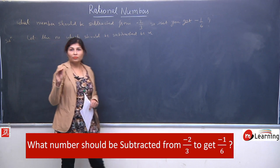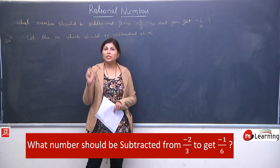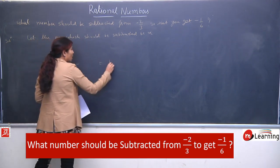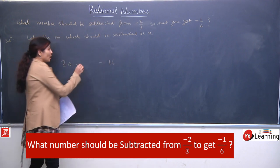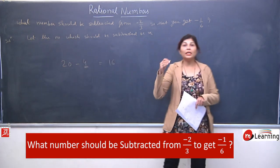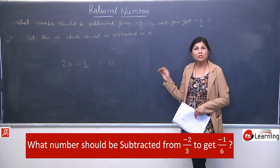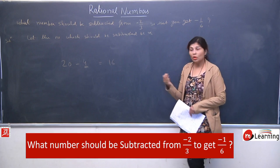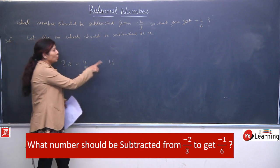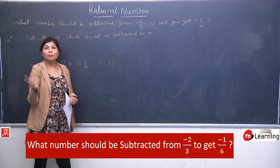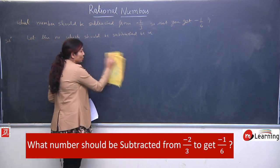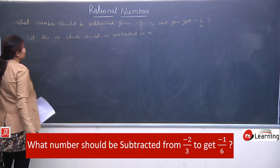Is question ko main bahut simple way mein bataungi. What should be subtracted from 20 to get 16? Simple sa question liya: 20 mein se kya subtract kare ki 16 mil jaye? Aapka answer hoga 4. How? 20 minus 16 kiya — hum ne apne hi brain mein 20 mein se 16 ko subtract kiya, answer aya 4. So hum likhenge: 4 should be subtracted from 20, then you will get 16.